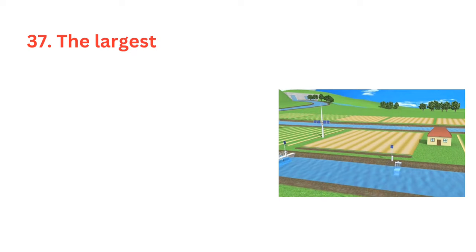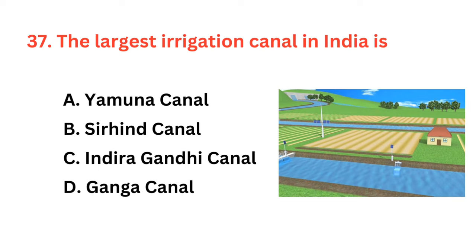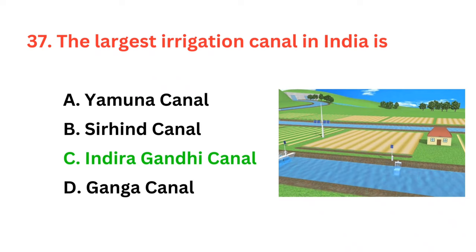The largest irrigation canal in India is? The correct answer is option C: Indira Gandhi Canal.